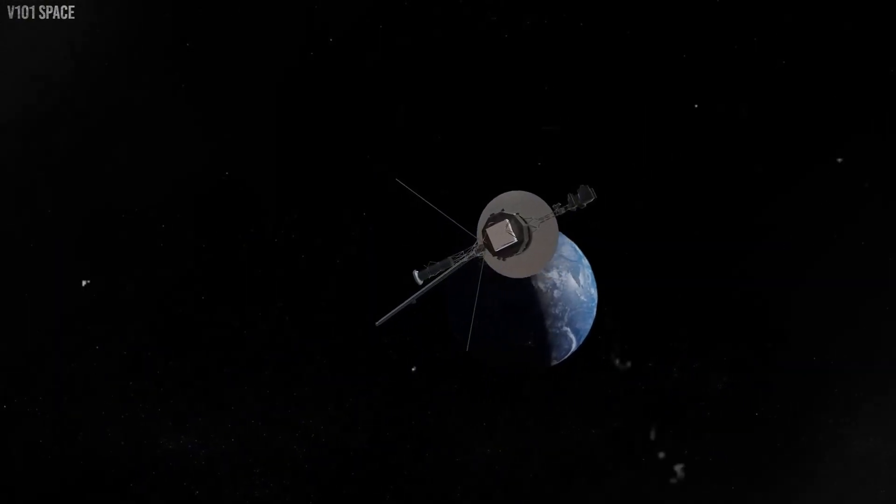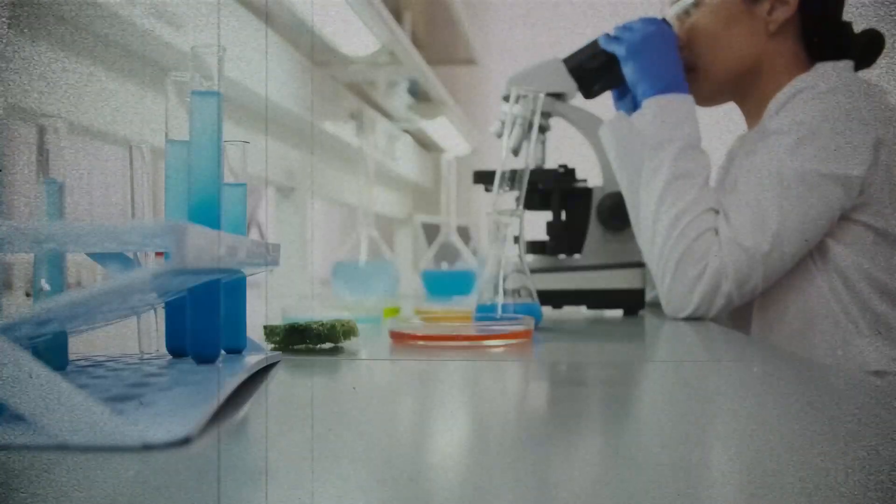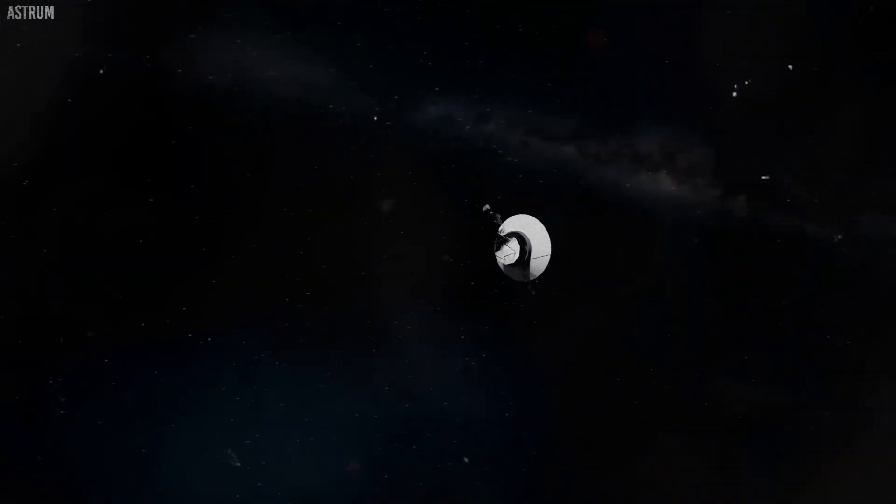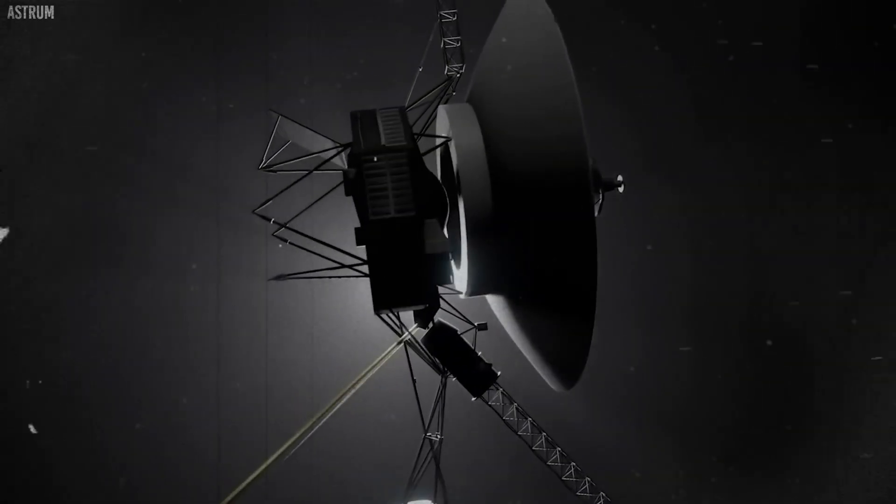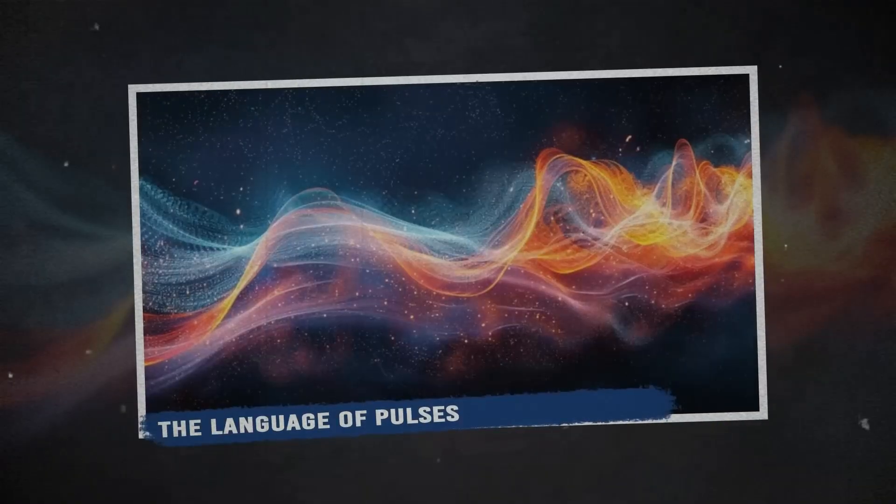Voyager 1 also ran into trouble when a software issue caused it to send data through a deactivated computer. NASA spent months diagnosing the problem and eventually sent a new command directing it to use a working computer, resolving the issue.